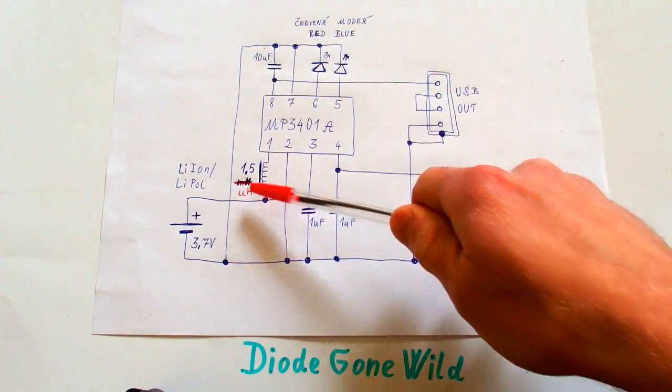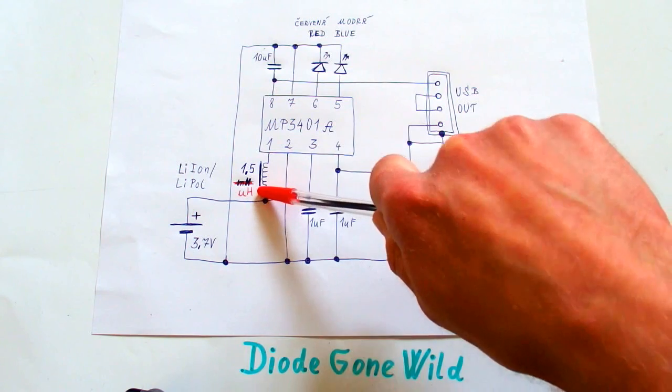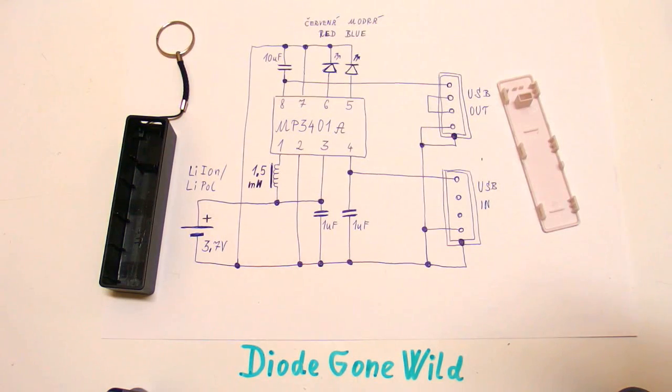Update: this inductor is actually 1.5 microhenries, not millihenries. So this is Diode Gone Wild, and see you in my next videos.